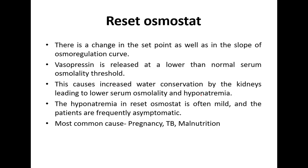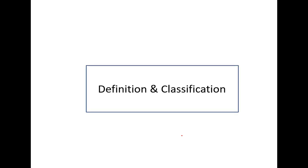Reset osmostat involves a change in both the set point and slope of the osmoregulation curve, causing vasopressin to be released at a lower-than-normal serum osmolality threshold, leading to increased water conservation and hyponatremia. This hyponatremia is typically very mild and patients are asymptomatic. Common causes include TB, malnutrition, and pregnancy. If a patient presents with asymptomatic hyponatremia, always keep reset osmostat as a differential diagnosis.